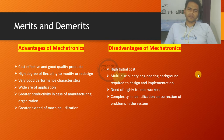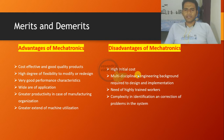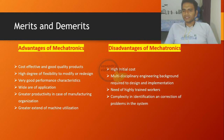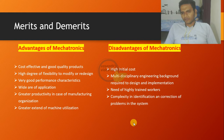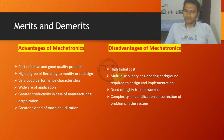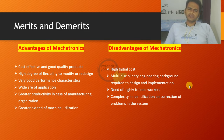The disadvantages include a lot of initial cost and the requirement of good engineering and multidisciplinary background candidates to design and implement the system. Highly trained workers are required, and the complexity in identification of a particular problem makes correction very tough. High expertise is needed — for example, setting up a mobile manufacturing unit or an implant manufacturing unit requires very high expertise since these involve life-related systems.